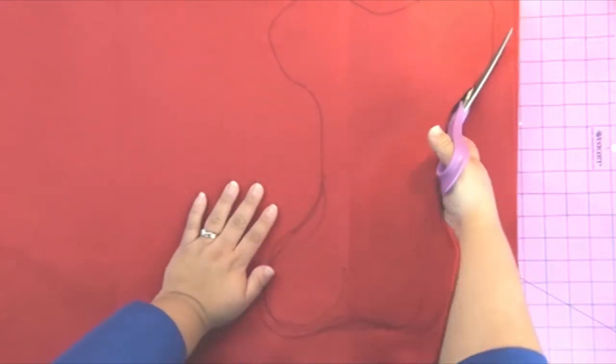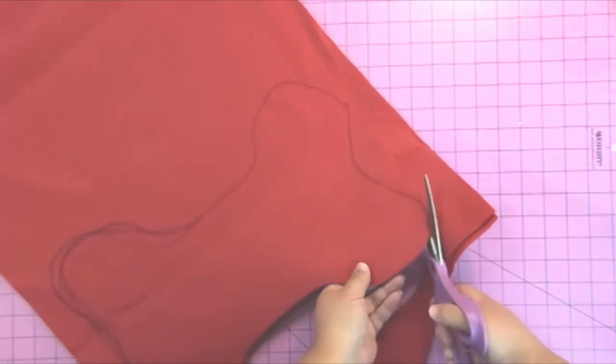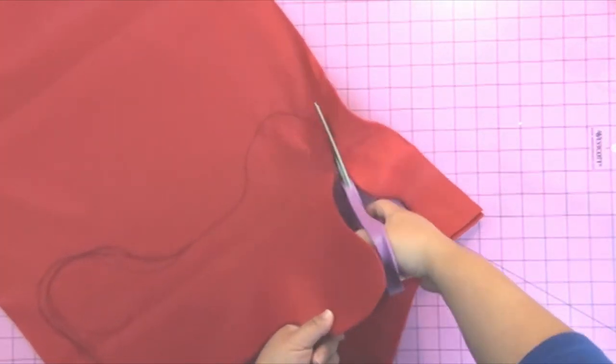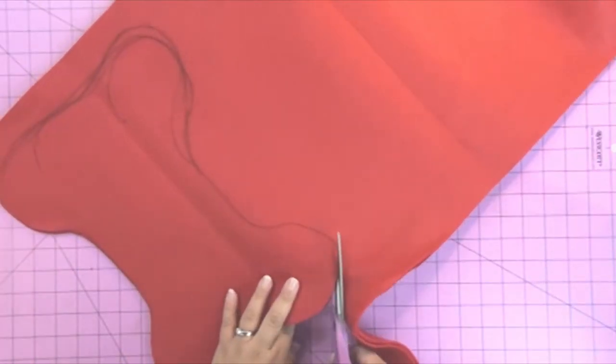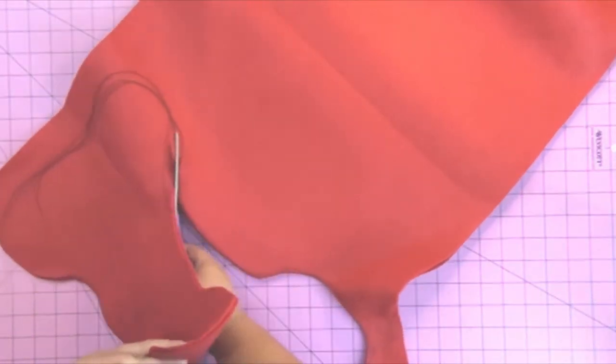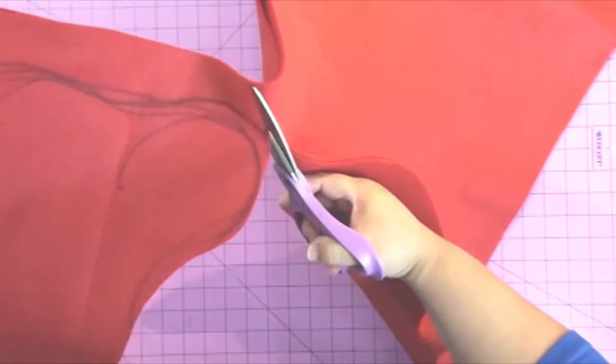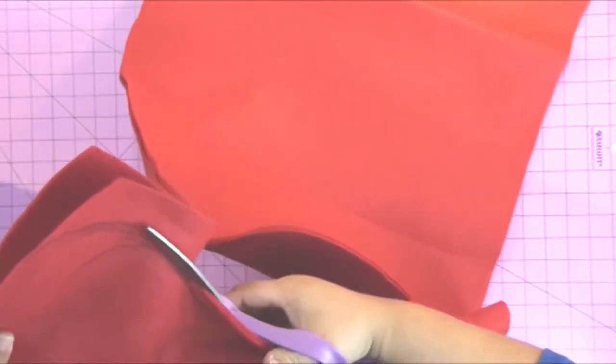Now take some scissors and cut through both layers of felt at the same time. You can use a pattern for this—just find a picture online of a dog bone and blow it up with a photocopier if you don't want to freehand it. But I wanted this to be whimsical and fun.